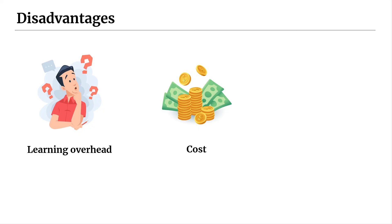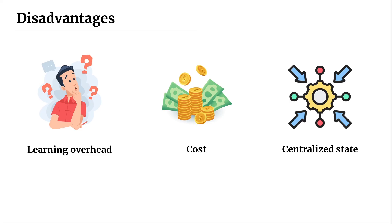Another disadvantage — which can also be seen as a pro — is that the state is now centralized with the team that owns the Step Function workflow. If you're in a large company that operates using something like a service-oriented architecture where different teams own different components, and you choose to use Step Functions, the state of these different components will be embedded in a single workflow. The question becomes: who now owns this workflow? Is it one particular team, or a combination of teams? If it's different teams, you have to figure out how to work together to modify and update the Step Functions safely.